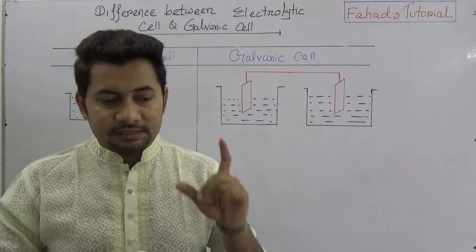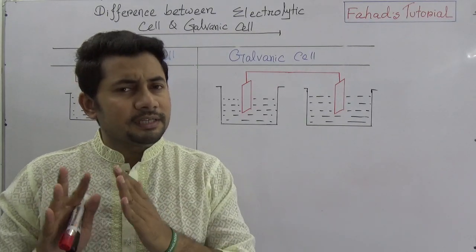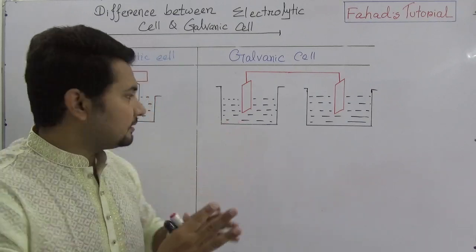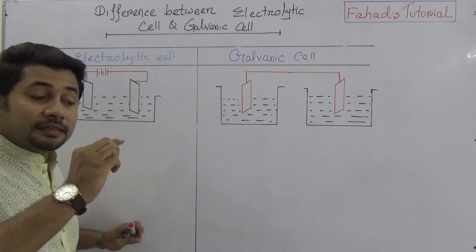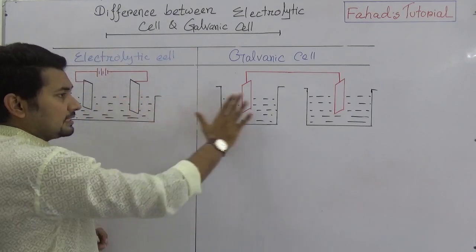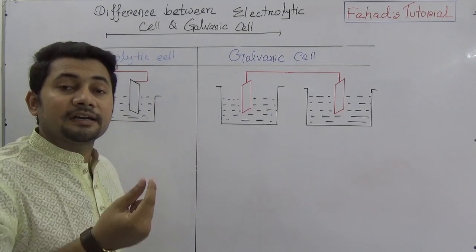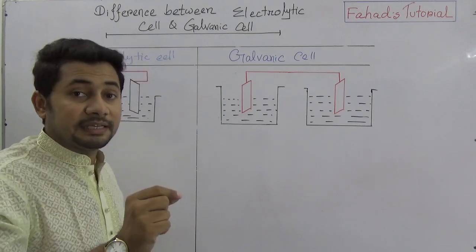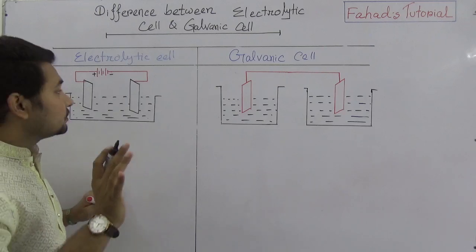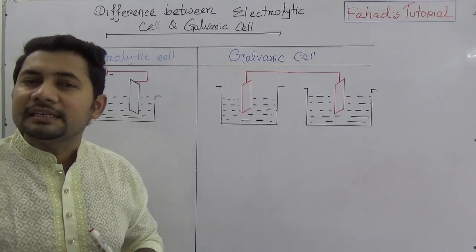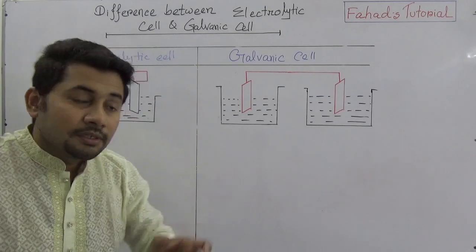Now you might think: what are the differences between an electrolytic cell and a galvanic cell? In the electrolytic cell, a chemical reaction is going on, but the key difference is that a battery or external electric source has been added. This is the positive part and this is the negative part. In an electrolytic cell, electric energy is used to facilitate the chemical reaction.